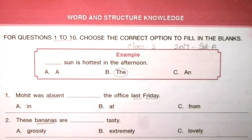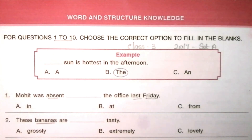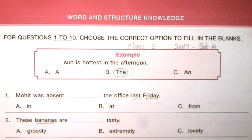Hi, welcome to Students Reference. If you are new to this channel, please subscribe and click the bell icon to get notifications for upcoming videos. Today we are going to discuss the 2017 Set A IEO question paper for Class 3 students. I have already uploaded some other IEO, NSO, and IMO question papers for Class 3 students. Please go to the playlist in Students Reference and click Olympiad Class 3 to get these question papers. Today's first topic is Word and Structure Knowledge, for questions 1 to 10: choose the correct option to fill in the blanks.